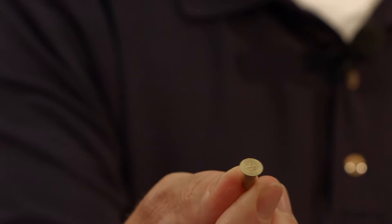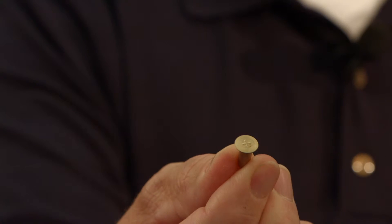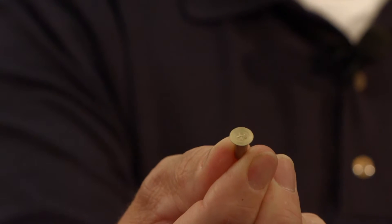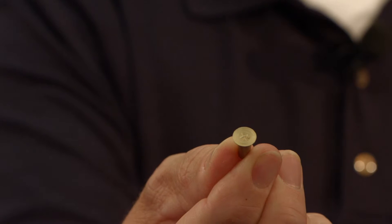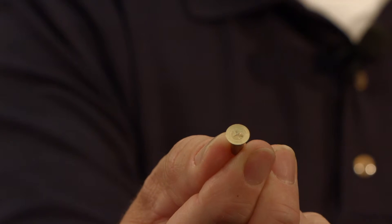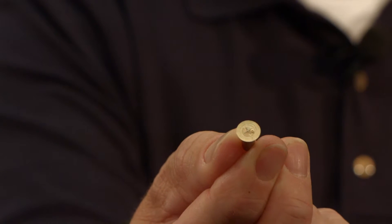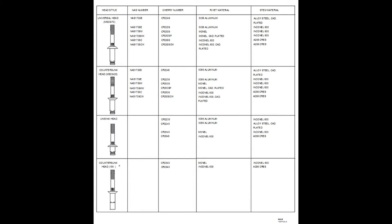Rivet identification is noted by the standard head markings located on the heads of the rivets. This identification can be very helpful in identifying the type of rivet used and is helpful when performing a repair in a particular area or simply just replacing a loose rivet. A chart provided in the King Air SIRM in Chapter 20-50-01-201 aids in identifying commonly used rivets throughout the aircraft, including common solid shank and blind rivets.